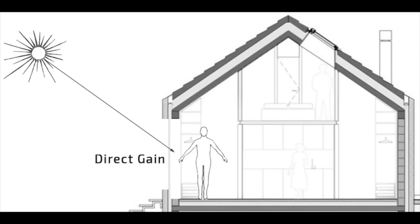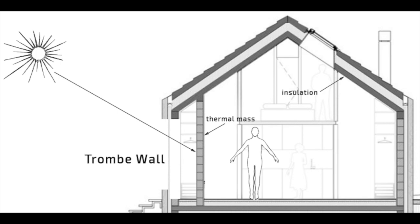In passive solar building design, windows, walls, and floors are made to have certain effects and qualities throughout the year, specifically the winter and summer months. This is called passive solar design because, unlike active solar heating systems, it does not involve the use of mechanical and electrical devices.